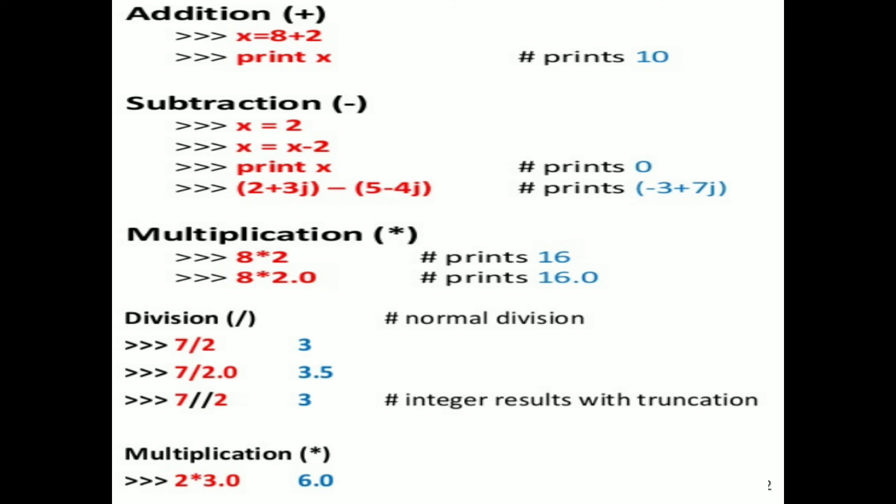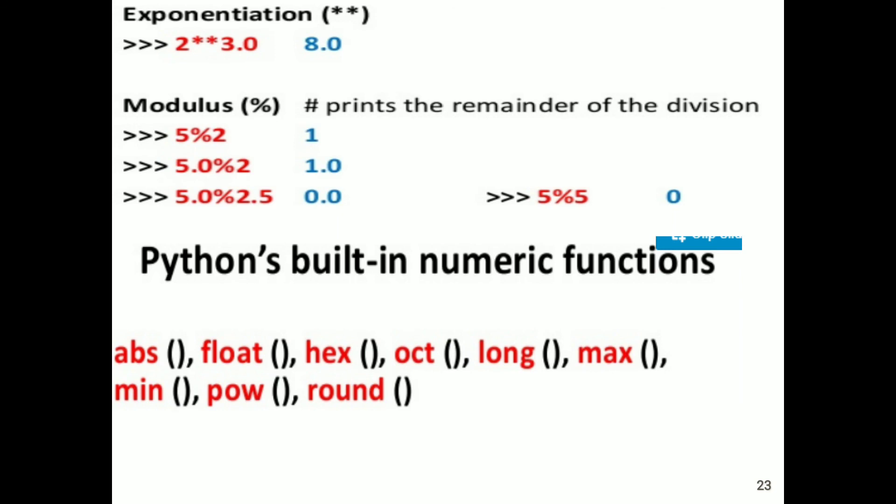Division: 7 divided by 2 gives 3.5; 1 divided by 2.0 gives 3.5; 1 divided by 2 gives 3 (integer result with truncation). Exponential: for values 2 and 3, 2 to the power 3 equals 8. With floating point: 2 ** 3.0 gives 8.0.